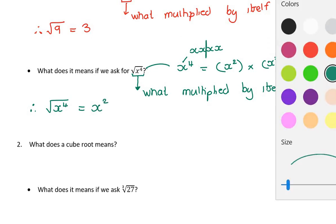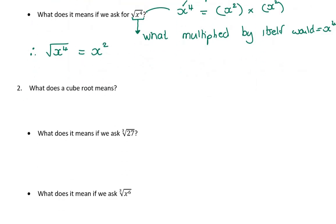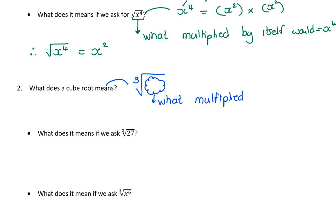Let's expand this idea. What does a cube root mean? A cube root uses the symbol with a 3, and whatever is placed under the cube root, this means: what multiplied by itself and then by itself again would give me that value? So a cube root means what multiplied by itself, and then by itself again, would equal the value under the root.